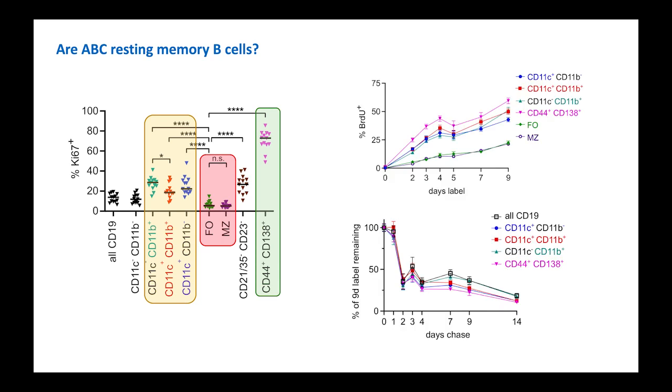Moreover, with a combination of BRDU labeling and label chase experiments, we found that half of the ABCs took up BRDU within 9 days, and the majority of those lost their label quickly, suggesting considerable proliferation within, or flux through, the compartment.